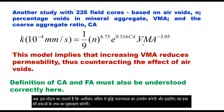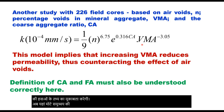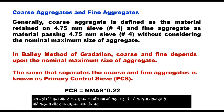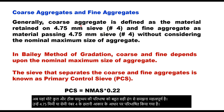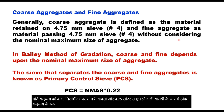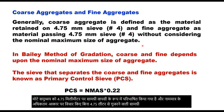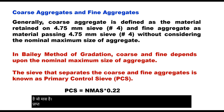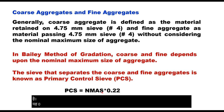It is important to understand the definitions of coarse aggregate and fine aggregate correctly. Coarse and fine aggregates are generally defined based on a sieve size of 4.75 mm or sieve number 4. Coarse aggregate is defined as the material retained on 4.75 mm, and fine aggregate as the material passing 4.75 mm, without considering the nominal maximum size of aggregate. But in the Bailey method of gradation, coarse and fine aggregate depend upon the nominal maximum size of aggregate, i.e. NMAS.